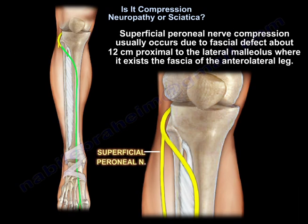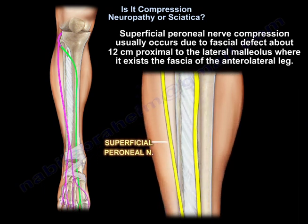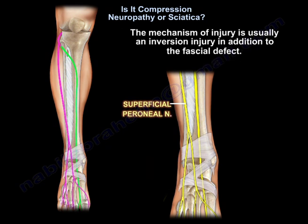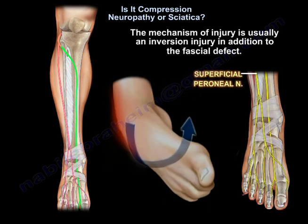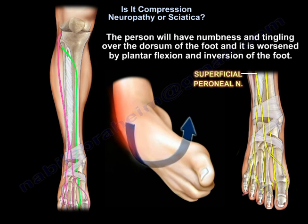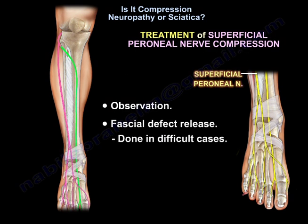Superficial peroneal nerve compression usually occurs due to a fascial defect about 12 cm proximal to the lateral malleolus, where it exits the fascia of the anterolateral leg. The mechanism of injury is usually an inversion injury in addition to the fascial defect. The patient will have numbness and tingling over the dorsum of the foot, worsened by plantar flexion and inversion. Treatment is observation or fascial defect release in difficult cases.